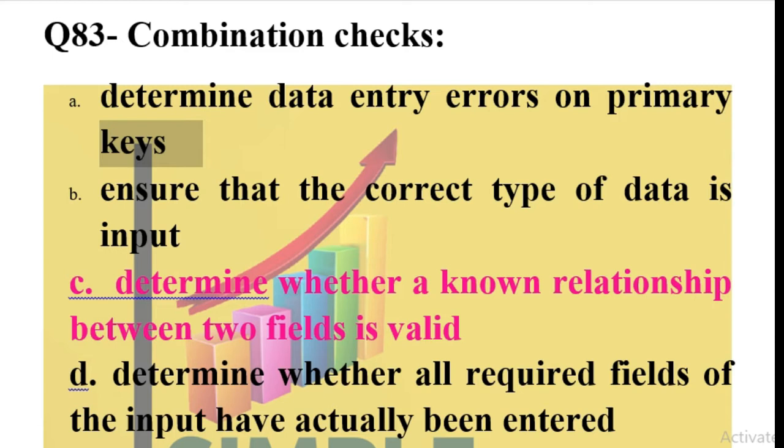When we implement the backend, database is implemented, so which combination checks are done and why are they done? Determine errors on primary keys? No. Correct data type entered in input? No. Determines whether a known relationship between two fields is valid? This is what is checked here in the combination checks.